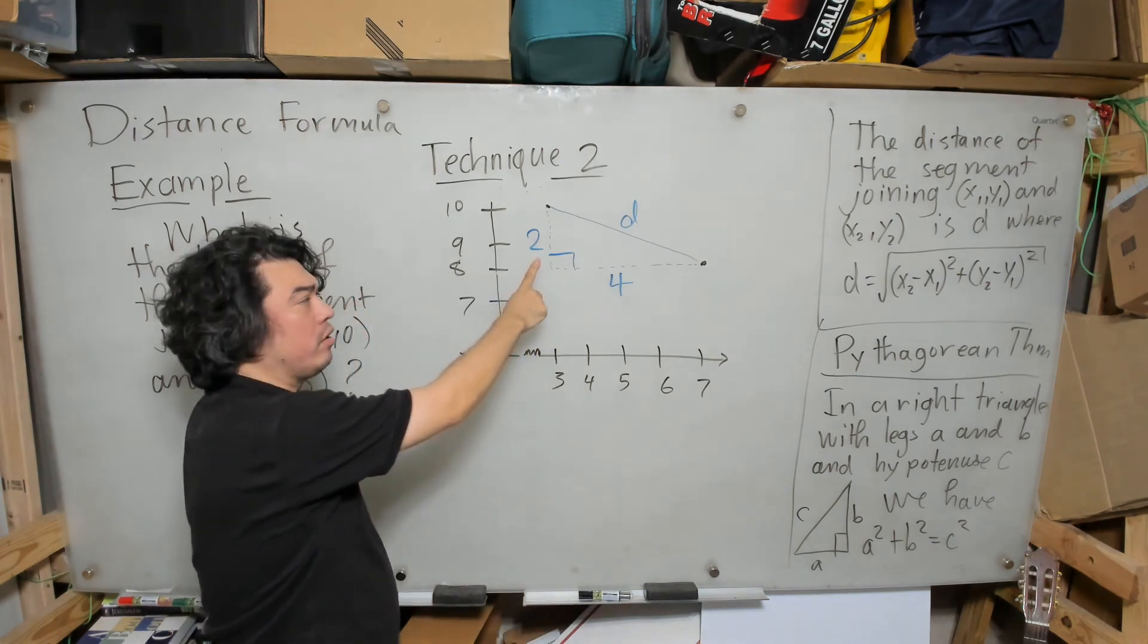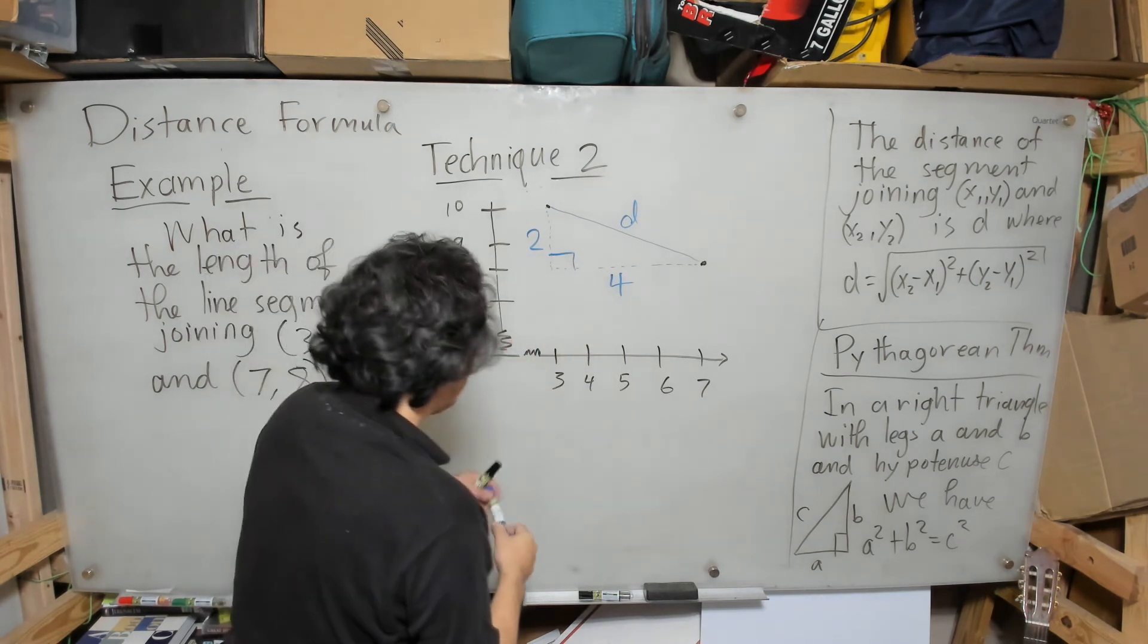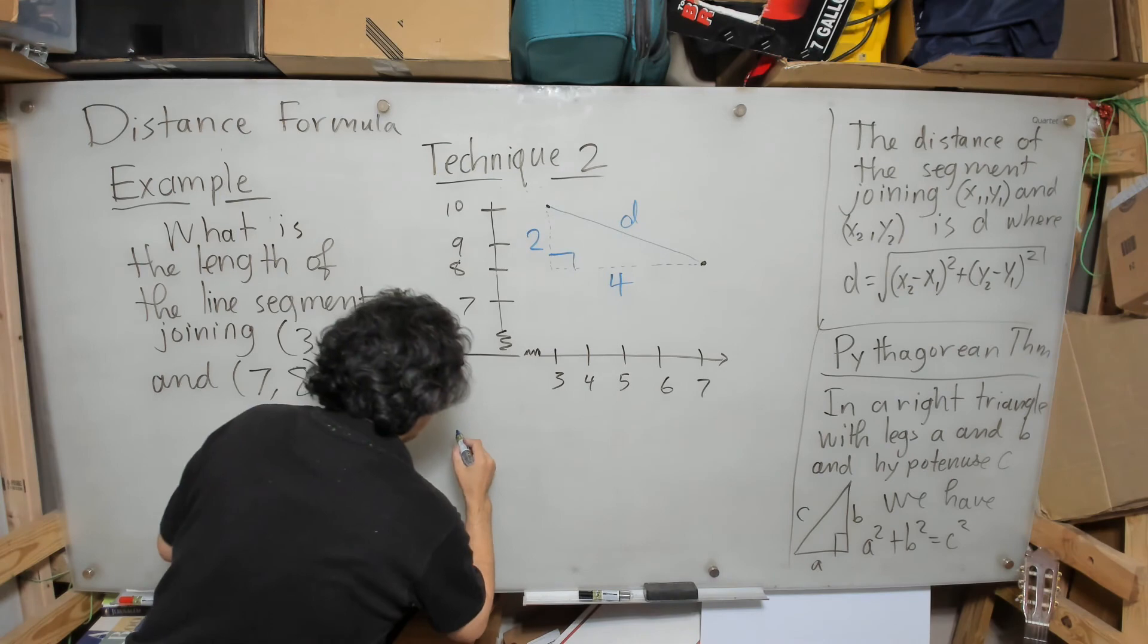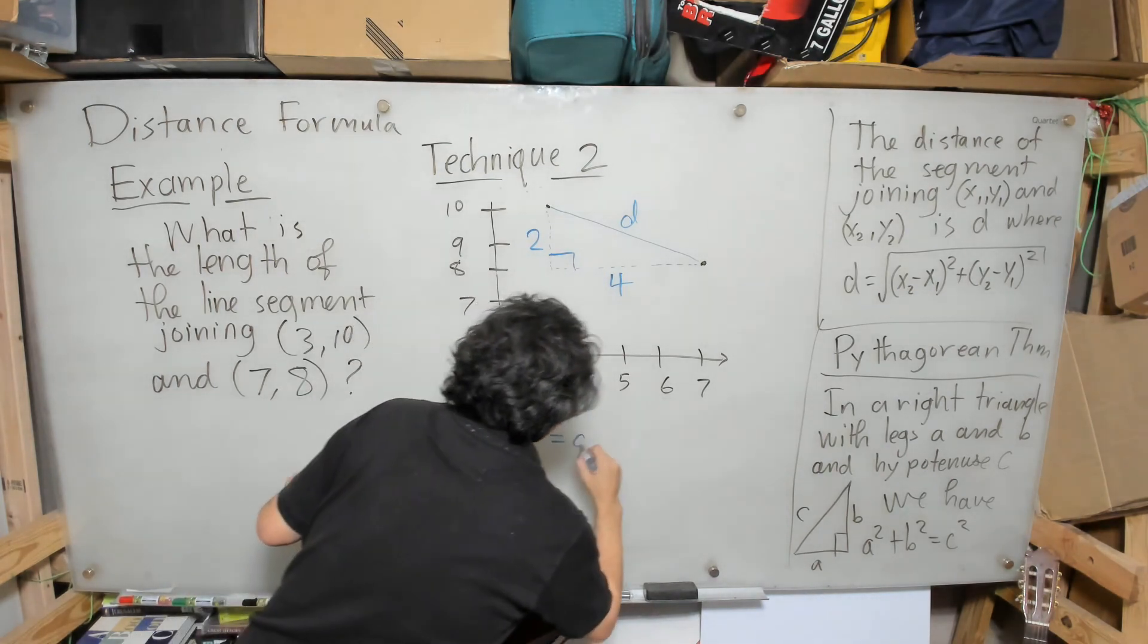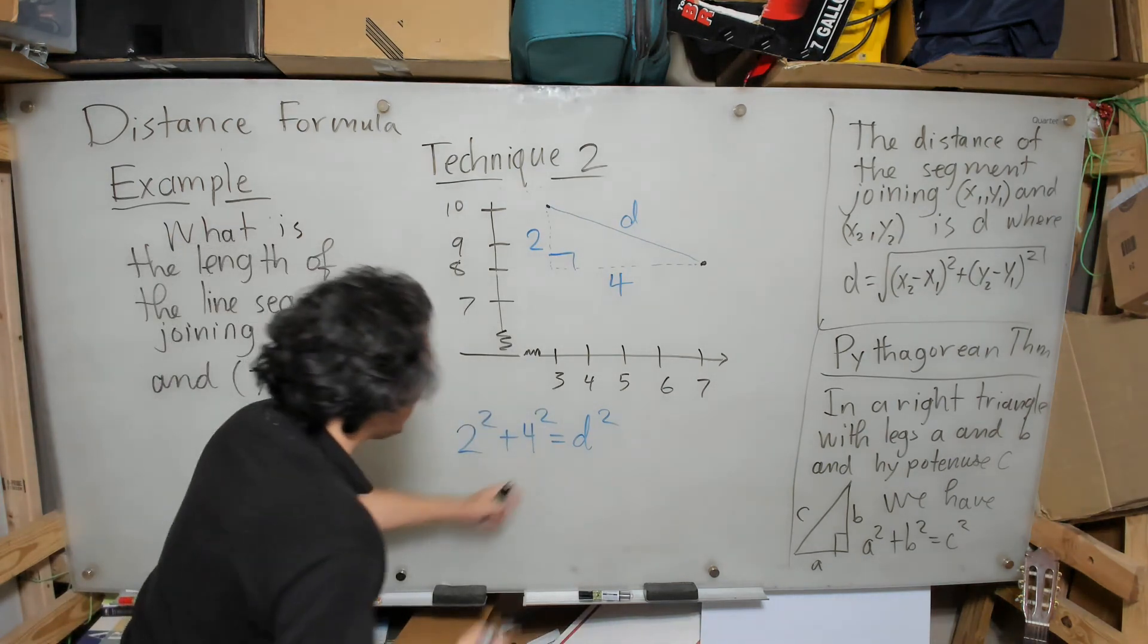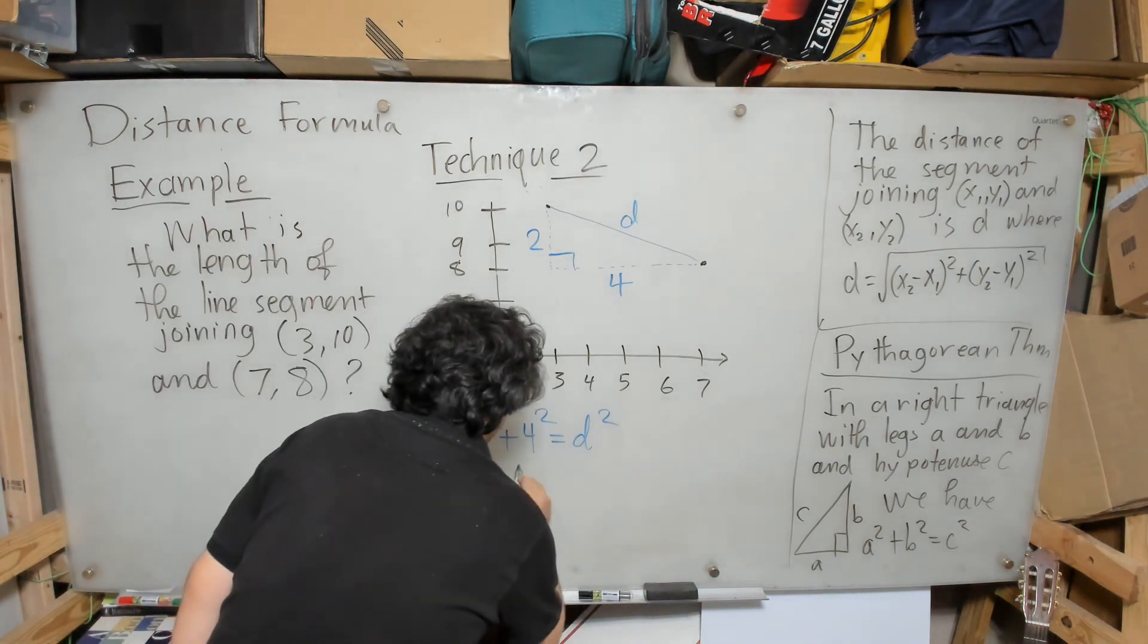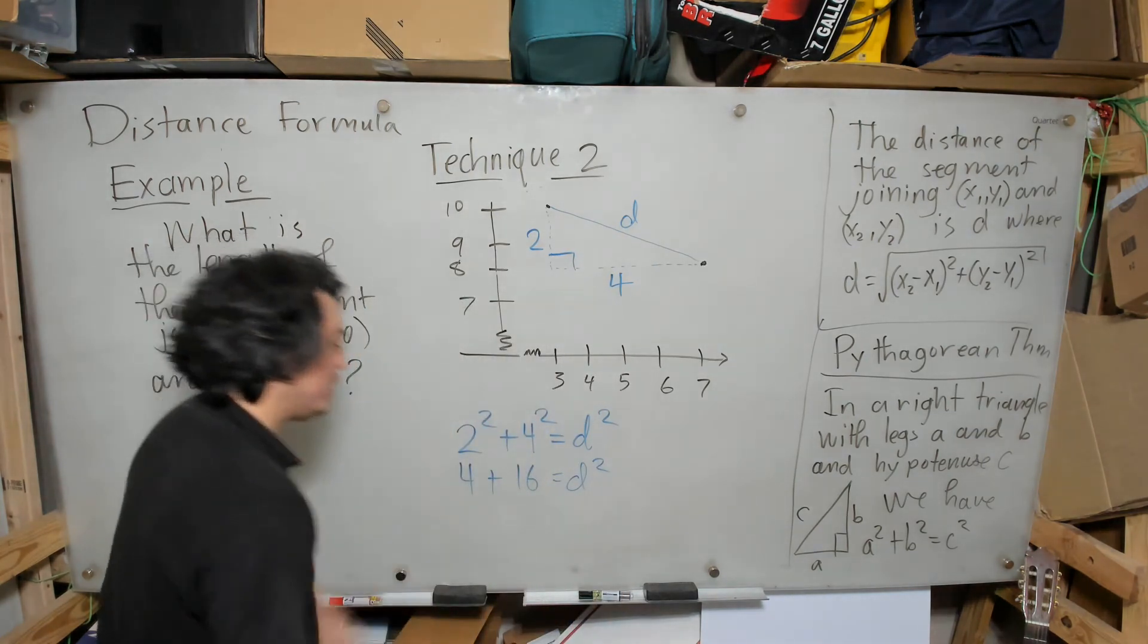Now here we're going to apply the Pythagorean theorem. 2 is a leg because it's not across from the right angle. 4 is a leg because it's not across from the right angle. This is the hypotenuse. So I must have that 2² + 4² = d². I know 2² is 4, I know 4² is 16, so 4 + 16 = d². 4 + 16 is 20.